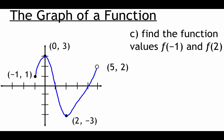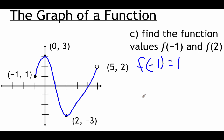One last thing with our graph — finding a couple of function values: f(-1) and f(2). Remember, f of something just replaces our y value. So f(-1) means we're looking at the y value when x equals negative 1 — the y value there is 1, so f(-1) = 1. For f(2), we find the y value when x equals 2 — looking at our graph, the y value is negative 3, so f(2) = -3.